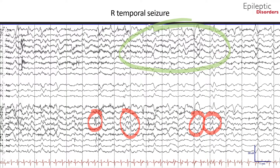In the fourth page of this seizure shown in average montage, there is less myogenic artifact and emergence of rhythmic sharp waves best noted over the right temporal region shown by the red circles over the right F8, T4, and T2 channels. There is also contralateral left temporal rhythmic sharp wave activity and rhythmic sharply contoured slowing over the left hemispheric and midline channels, shown by the green highlight, representing spread to both hemispheric chains.